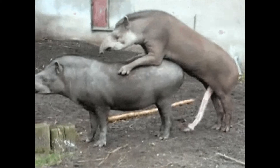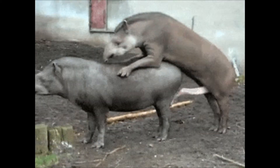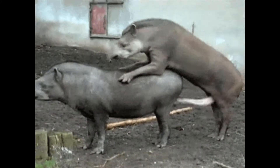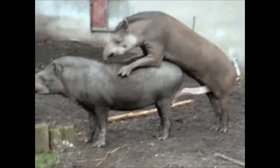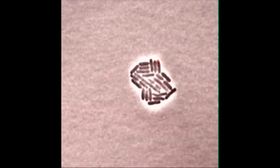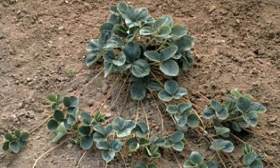Both sexual reproduction and asexual reproduction have advantages and disadvantages. Sexual reproduction requires two parents to bring the gametes together so they fuse. Whereas asexual reproduction, such as with bacteria, only requires one parent and no gametes are involved. We can also see this with many plants, such as strawberries.